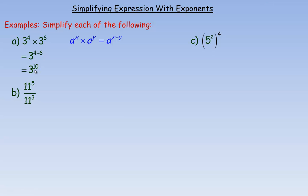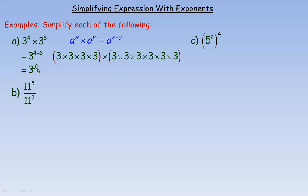A common misconception here is to multiply the bases and think of it as 9 to the power of something — 3 times 3 is 9. But that's incorrect because 3 to the power of 4 means four 3s multiplied, and 3 to the power of 6 means six 3s multiplied. All together, there are ten 3s multiplied. If you wrote this as 9 to the power of 10, that would mean ten 9s multiplied, not ten 3s. So the base has to stay the same. We would leave the answer as 3 to the power of 10 unless told to evaluate it as a number.